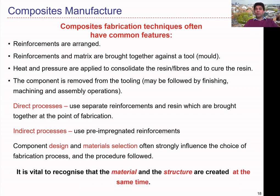It is vital to recognize that the composite material and the structure are created at the same time during manufacturing. This means we can control properties by aligning reinforcements or fibers in desired directions, or by mixing reinforcements and matrix material in proper ratios to get tailor-made properties. These are common features across many composite manufacturing techniques, regardless of the material type or product being manufactured.